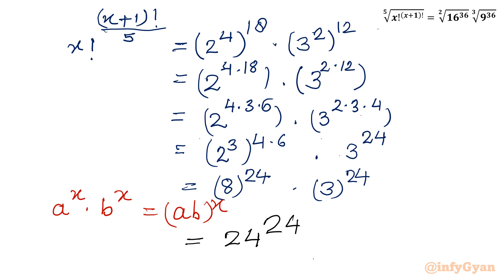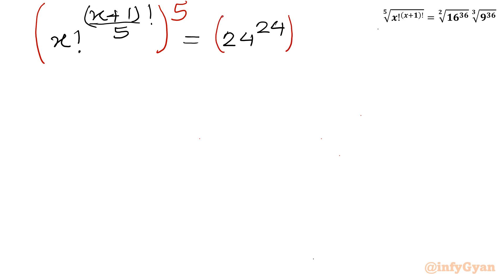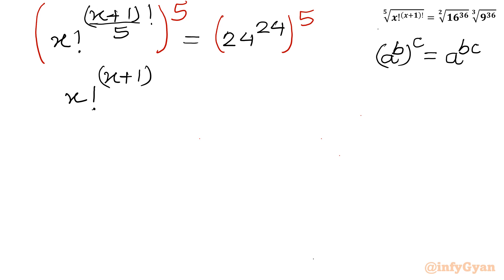Left hand side remains as is. Now let us write: x factorial raised to the power x plus 1 factorial divided by 5, equal to 24 raised to the power 24. Now I will raise both sides to the power 5. Using the same property of exponent — a power b, whole power c — we can take the product in the powers. So we cancel the 5, giving us x factorial raised to the power x plus 1 factorial. On the RHS we multiply 24 with 5, so this will become 24 raised to the power 120.